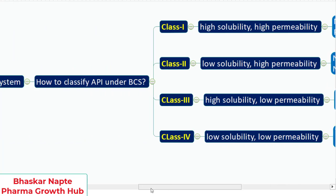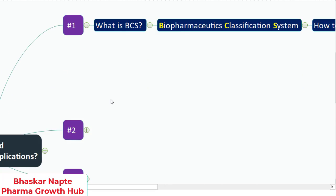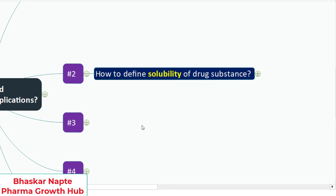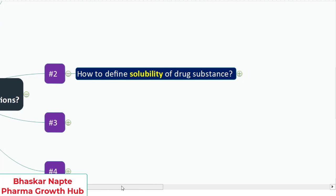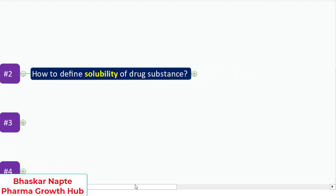The next important question you may get during the interview is: I understand there's a BCS classification where solubility needs to be assessed, so how are you going to define the solubility of the drug substance? This is certainly going to be a very important question, a question within the question.